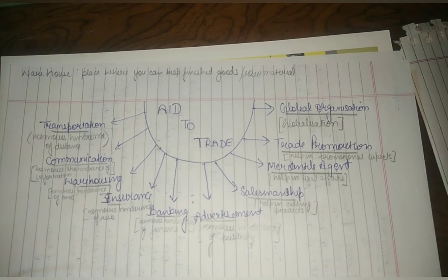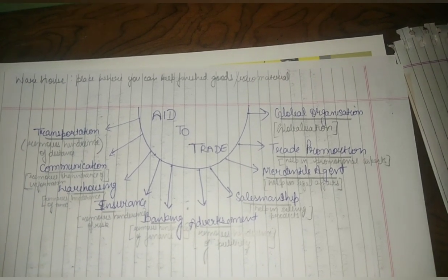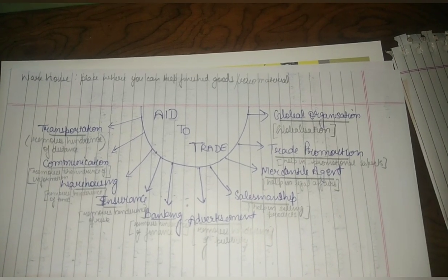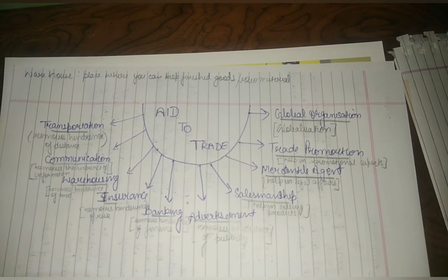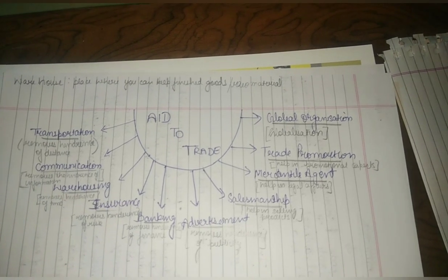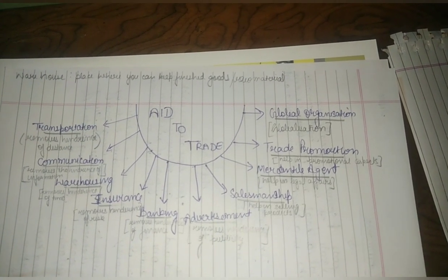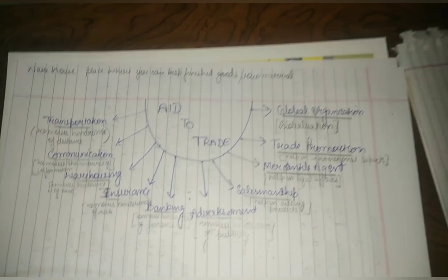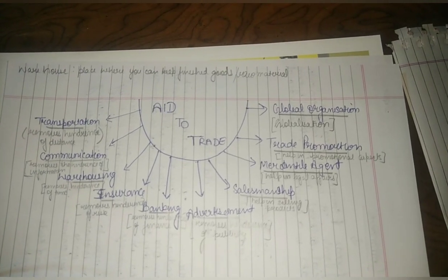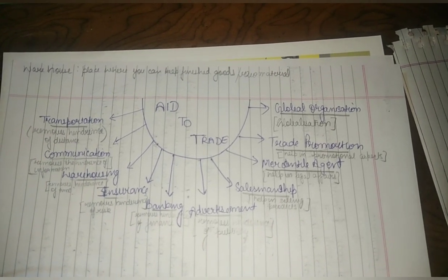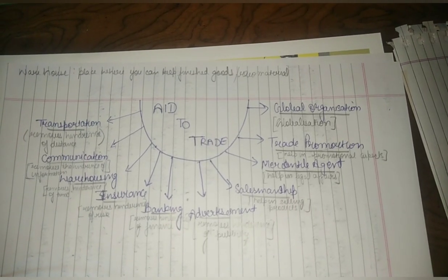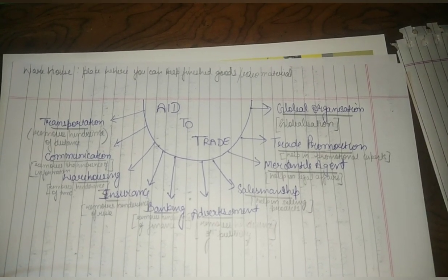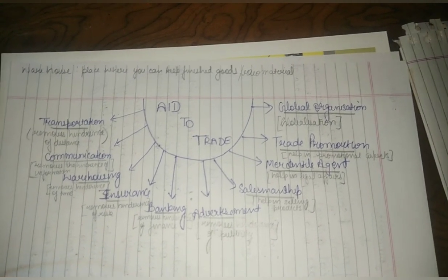For example, we can order Banarasi sarees into Punjab, and we can even export or send our famous phulkaris of Punjab to other states like Rajasthan or Banaras, or even other countries. So this is transportation — it removes the hindrance of distance. Now, communication removes the hindrance of information. Information is the most important thing, and we can get information from one place to another only through communication, so we need a strong communication system.